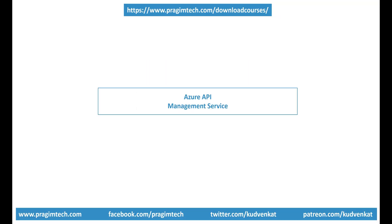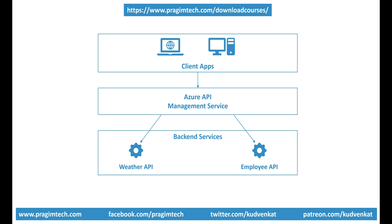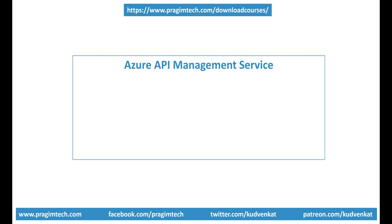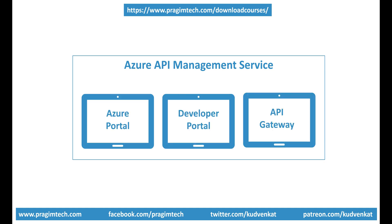So what is Azure API Management Service? Well, it sits on top of your backend API services — it's like a proxy to your backend APIs. In this specific example, Azure API Management Service is on top of our two backend APIs, that is weather API and employee API. Every call to these two backend APIs goes through Azure API Management Service. Now, Azure API Management Service is made up of three main components: Azure portal, developer portal and API gateway.